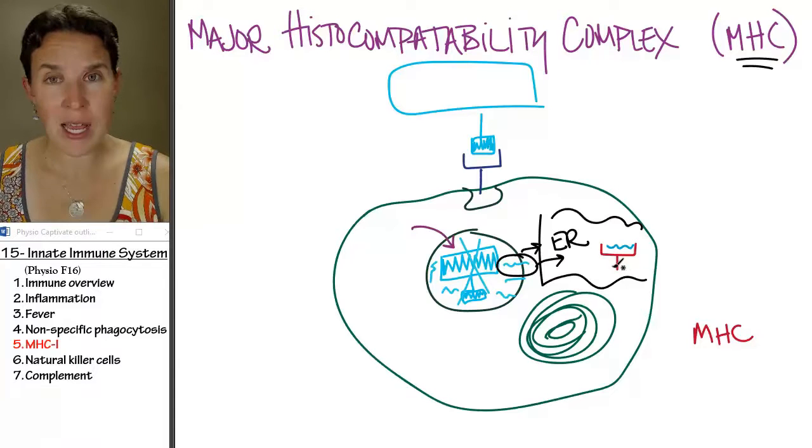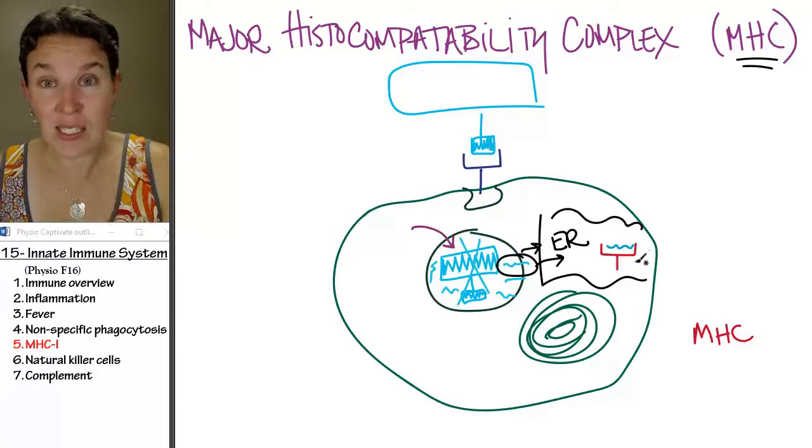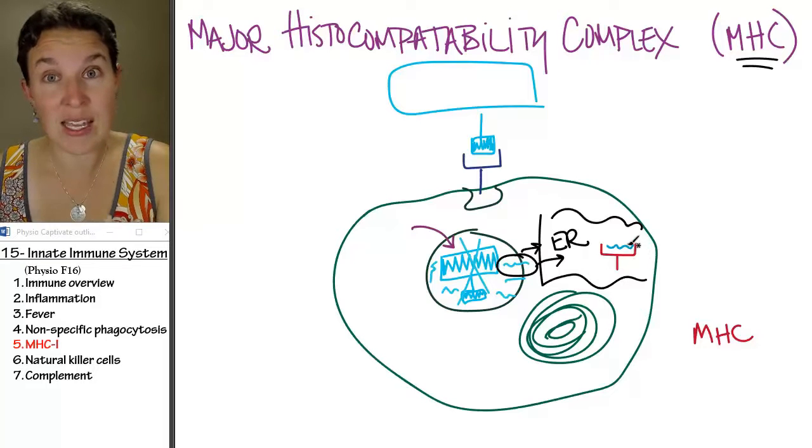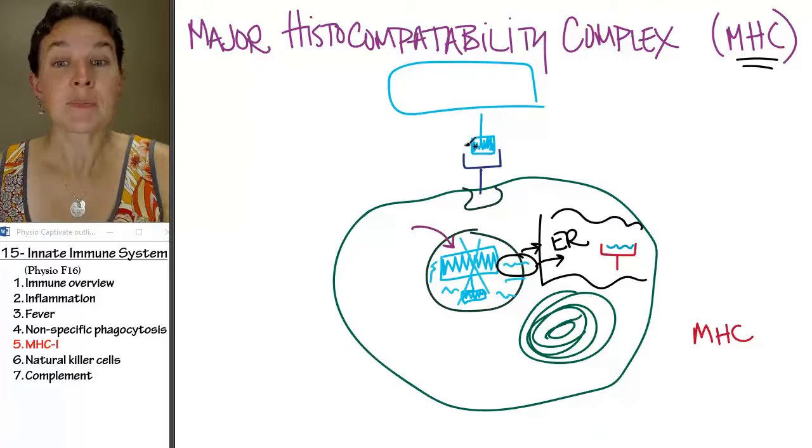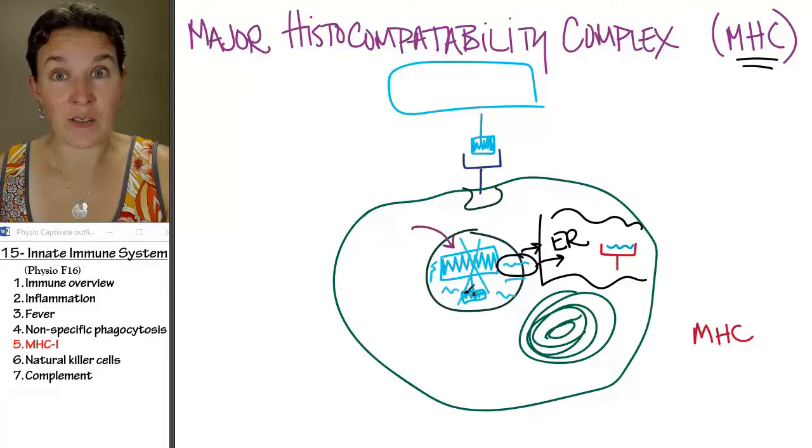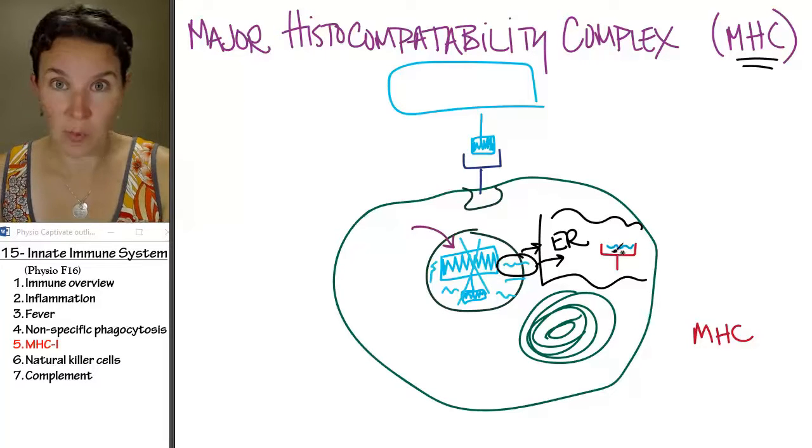The endoplasmic reticulum is constantly producing these loaded MHC platforms. If you just ate a pathogen, then you're going to load it up with pathogen parts.